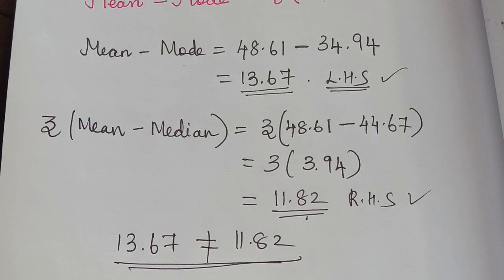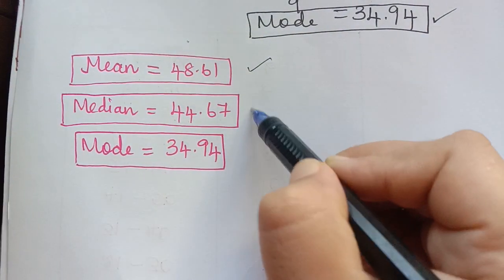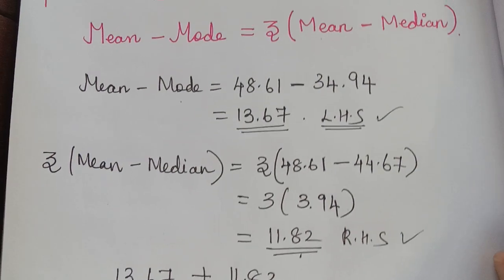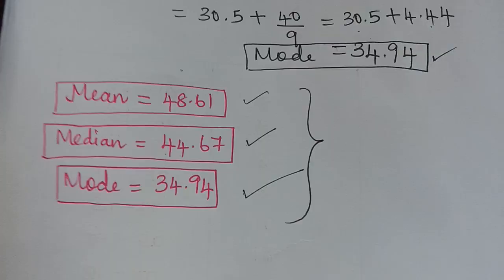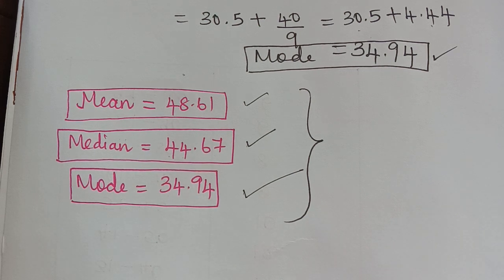So for the given grouped frequency data, we found the mean, median, and mode, substituted them into the empirical relation, and verified that it is not satisfied. This topic is very significant under measures of averages. In our next video, we will learn how to find missing terms when the mean and median are given. Thank you.